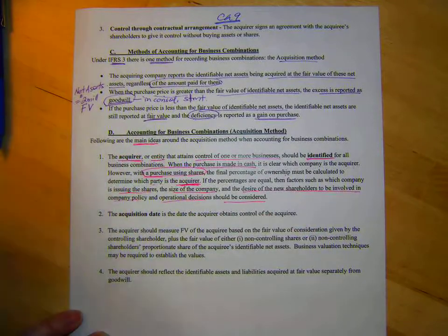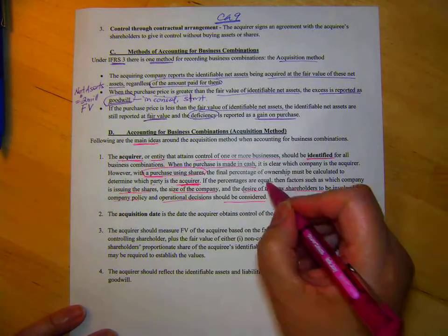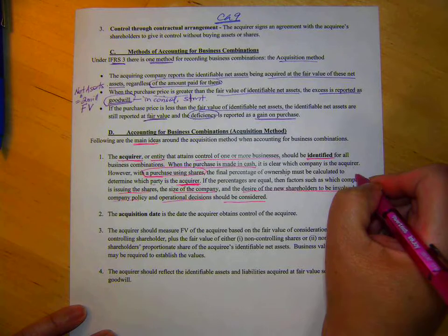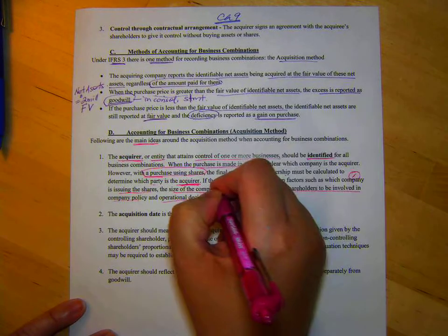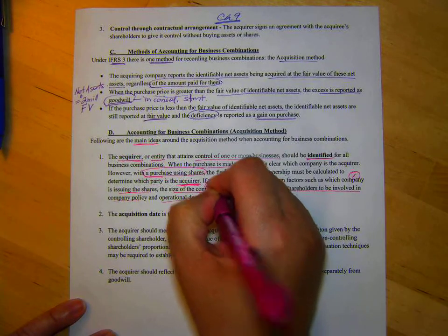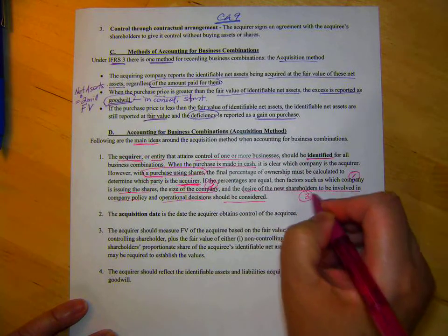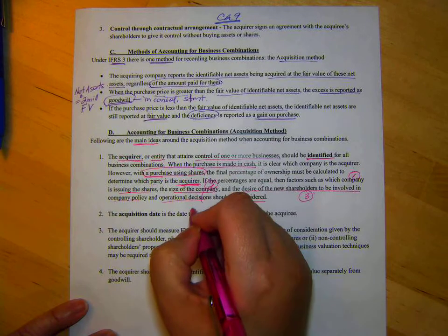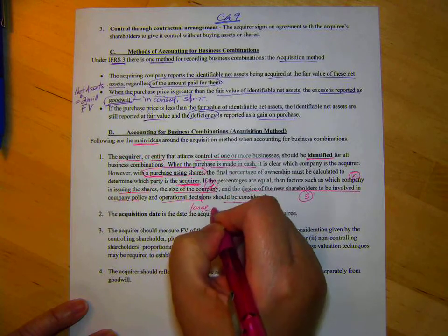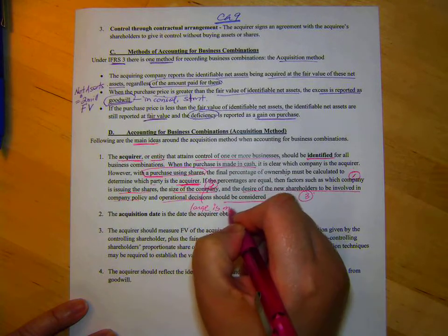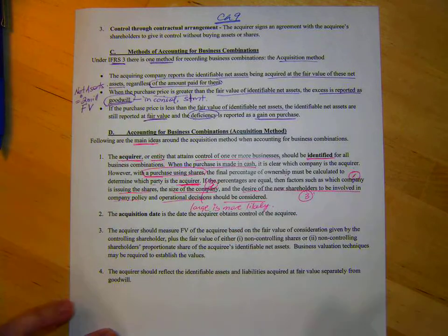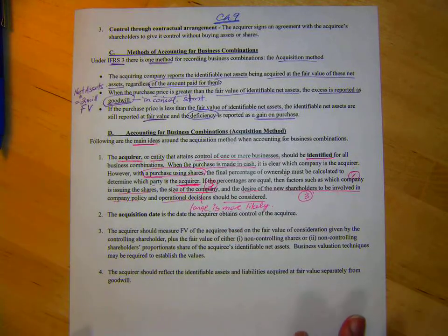So there's really three things here. If the percentages are equal, factors: which company is issuing the shares is important, the size of the company, that's the second thing, and whether or not they're involved, that's the third thing. Then we say size large is more likely. So that's one thing you have to keep in mind.